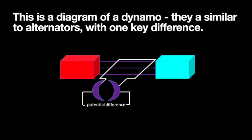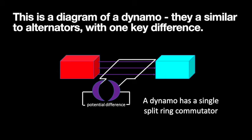This diagram is for a dynamo. It's very similar, but with one key difference. A dynamo has one split ring commutator. The alternator had two rings, but a dynamo has one single ring. Everything else remains pretty similar.